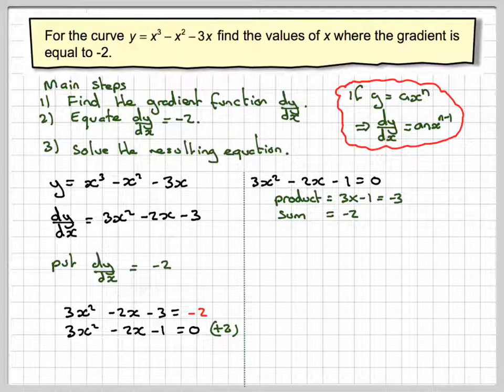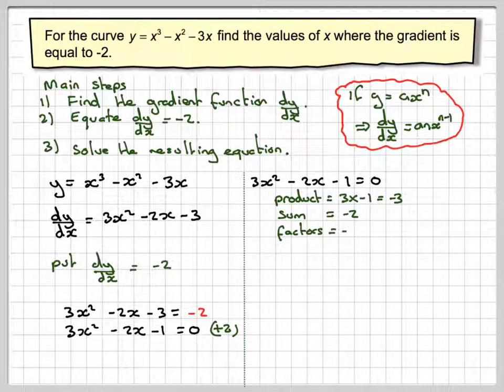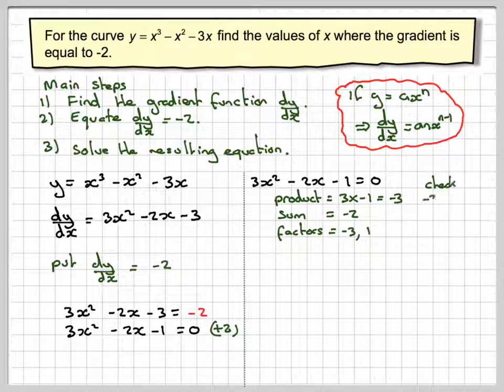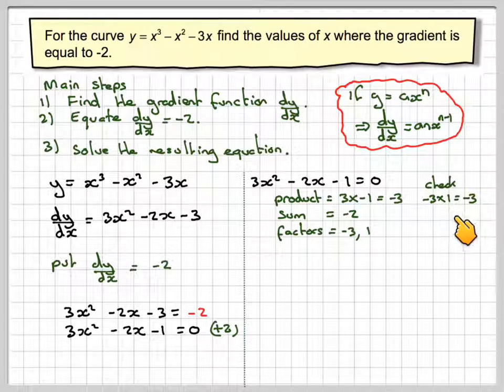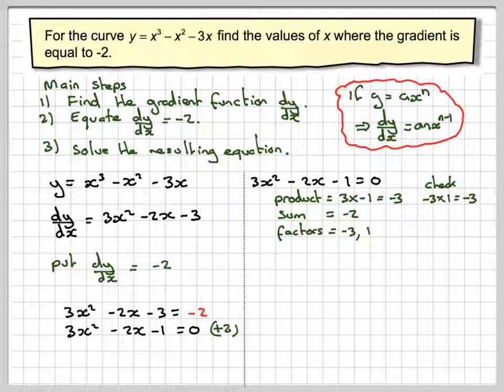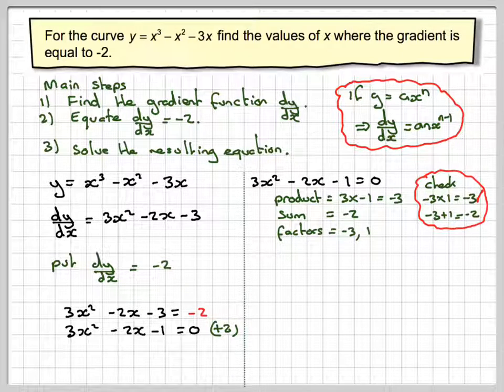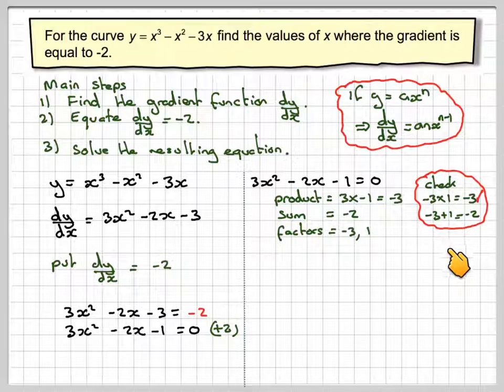Then for the factors, we need to find two numbers which when we multiply them together we get minus 3, and we add the same two numbers we get minus 2. So the factors are minus 3 and 1. We can check that. Minus 3 times 1 is equal to minus 3. And then the sum is minus 3 plus 1, which is minus 2, which is OK.